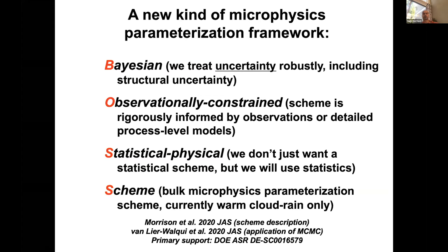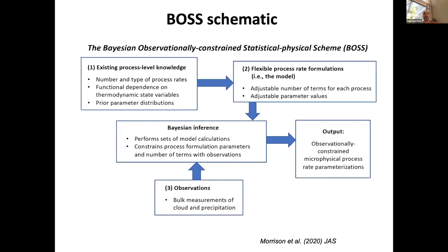Just a few highlights on BOSS. The B stands for Bayesian — we wrap this around a Bayesian framework to treat uncertainty robustly. This includes not only uncertainty in parameters but also so-called structural uncertainty — uncertainty in the form of the model or the model formulations themselves. It's observationally constrained, rigorously informed by observations or potentially detailed process-level models like Bin or Lagrangian schemes. It's a statistical-physical model — we don't use a purely statistical scheme but use statistical methods within a physical framework. Currently it's warm rain only and is a bulk microphysics scheme centered around prediction of several bulk variables. The papers describing the scheme were published in Journal of Atmospheric Sciences earlier this year.